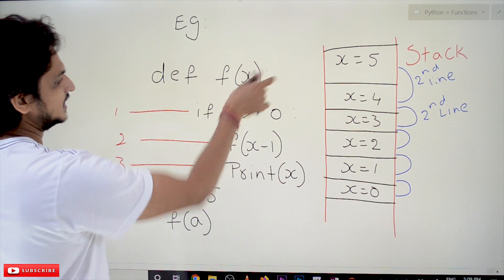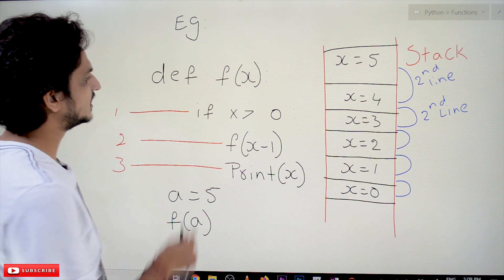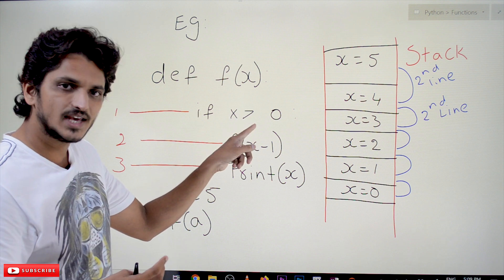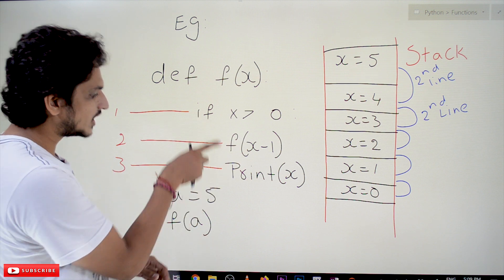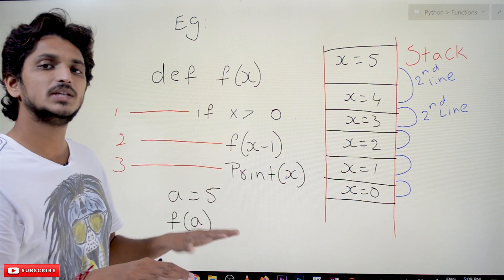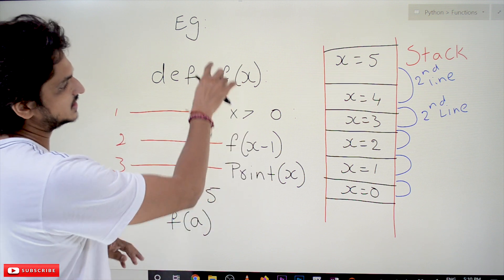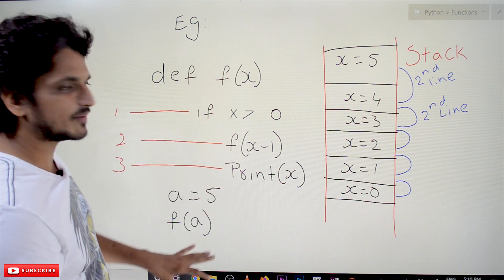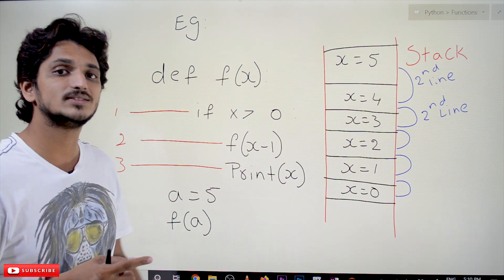The example we consider here is: def f(x). f(x) is a function. In that function, we have three lines of code. If the condition is yes, it will go into the condition and execute the second and third line. If the condition fails, it will come out of the if condition. Is there anything to execute after coming out? No — the function is completed. After this function definition, a is equal to 5 and we are calling the function here. Inside the function, we are calling the same function — that is what we call a recursive function.